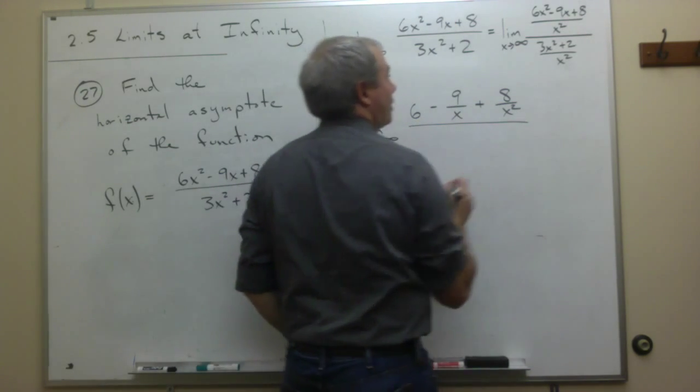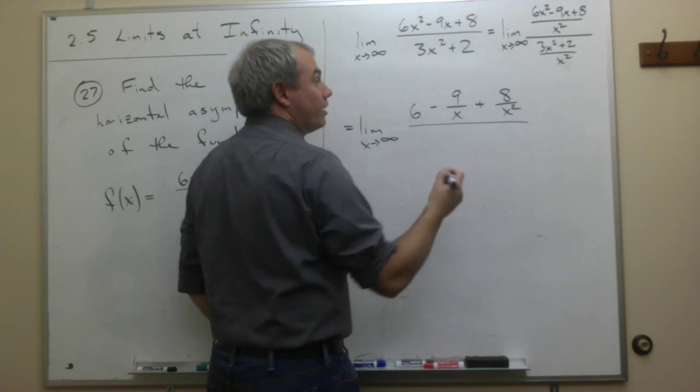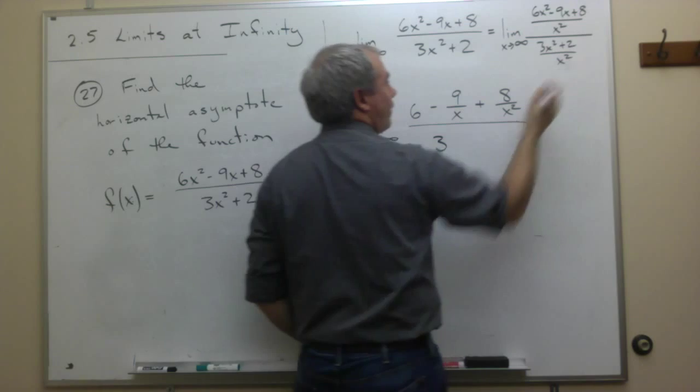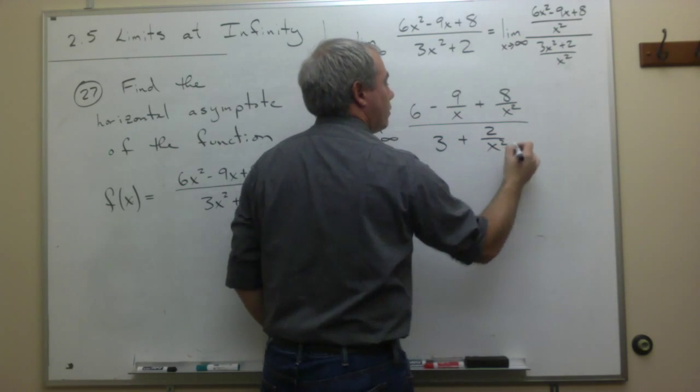On the bottom, I get a 3x squared divided by x squared, in other words, 3, and I get a 2 divided by x squared, which is 2 over x squared.